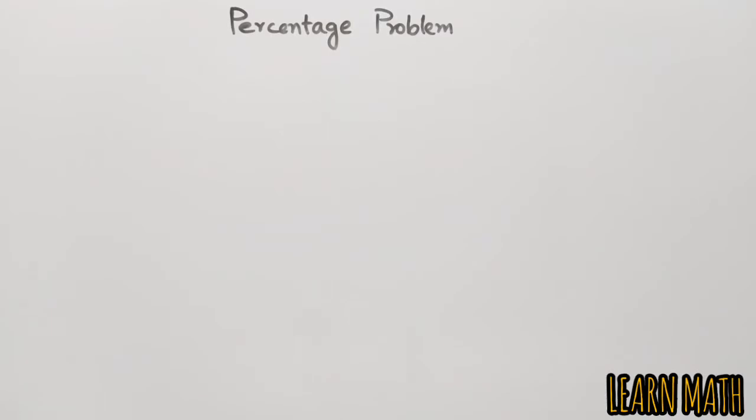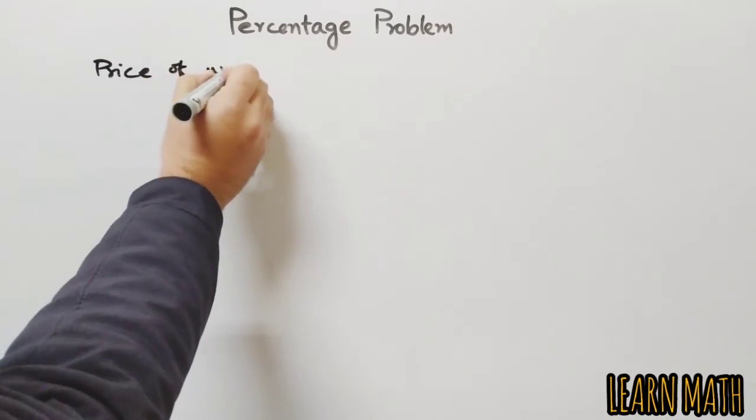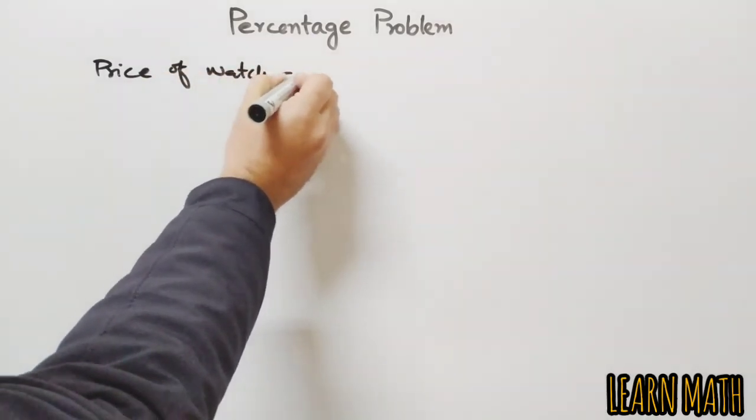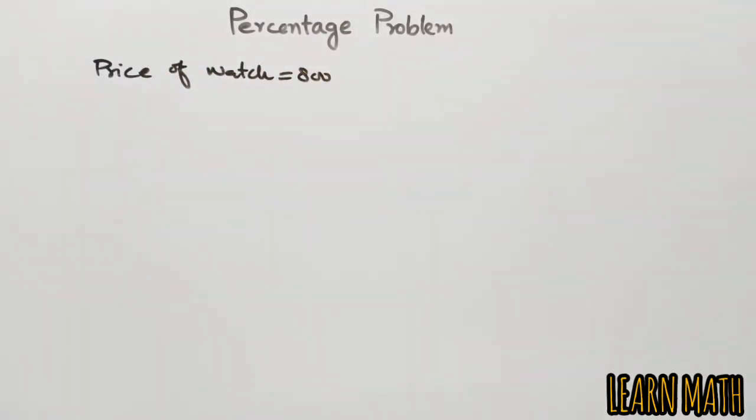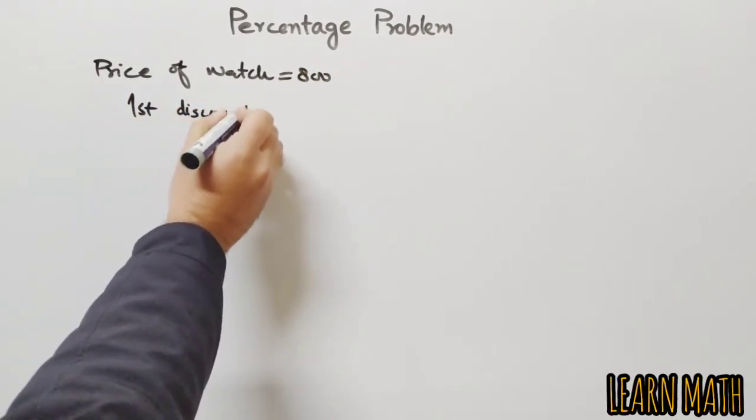Let's begin to solve the question. The price of the watch is 800 rupees, so price of watch equals 800. According to the question, the first discount is 10%.